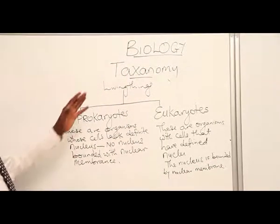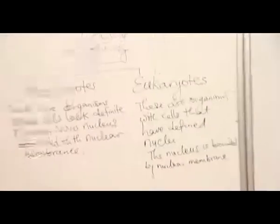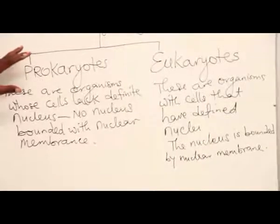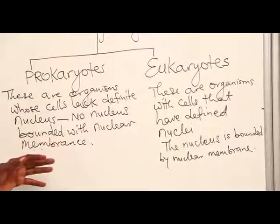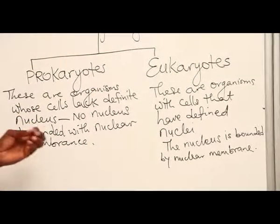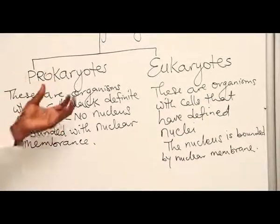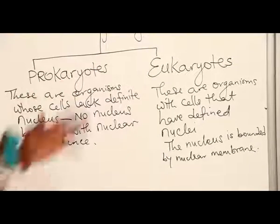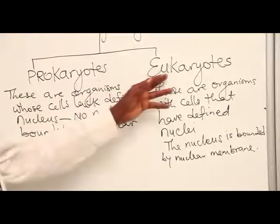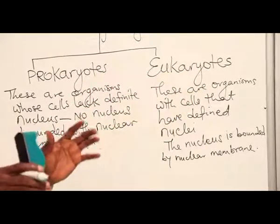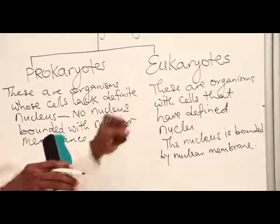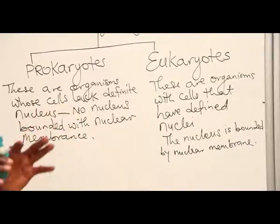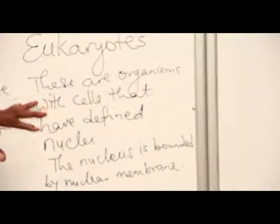Now, we have two groups of organisms existing. One group of organisms without a visible nucleus inside the cell — that is not to say they have no hereditary material. They have single chromosomes in their cells, but these chromosomes are found in the cytoplasm. In eukaryotes, the chromosomes are always confined in a defined nucleus, where all the nuclear materials and other proteins are stored.